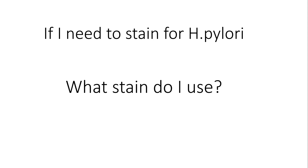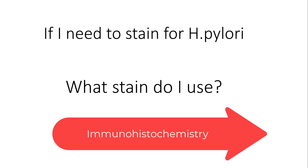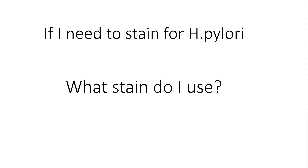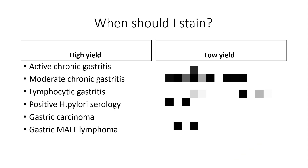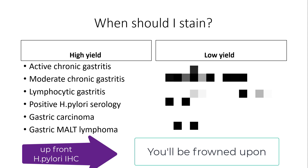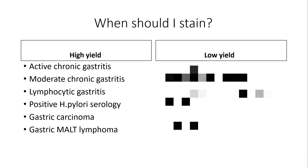A few words to finish up: what is the ideal stain? It turns out to be an immunohistochemical stain for Helicobacter pylori, but if you have other stains you're happy with, there is no harm in using them. When should you stain? People frown upon upfront stains without looking at the H&E first, but I prefer to think in terms of high-yield versus low-yield cases for detecting Helicobacter pylori.